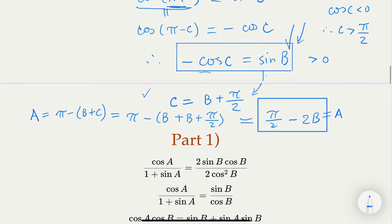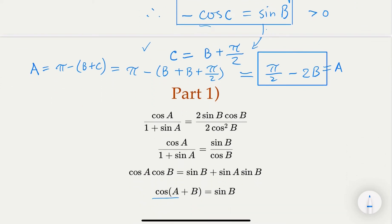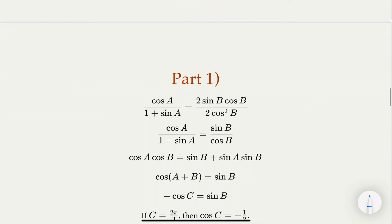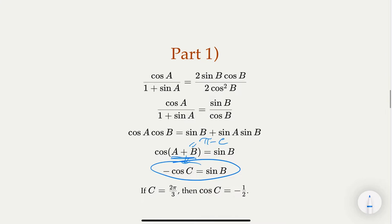For part 1, given C = 2π/3, we use -cos C = sin B. Since C = 2π/3, cos C = -1/2, so -cos C = 1/2. Therefore sin B = 1/2, which means B = 30 degrees, or π/6.